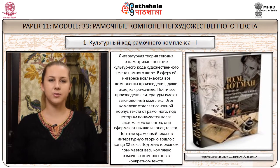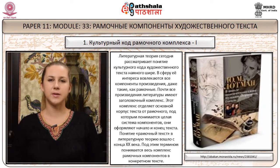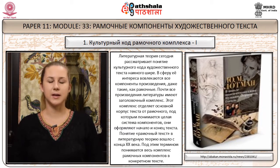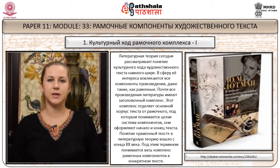Культурный код рамочного комплекса. Литературная теория сегодня рассматривает понятие культурного кода художественного текста намного шире. В сферу её интереса вовлекаются все компоненты произведения, даже такие, как рамочные. Почти все произведения литературы имеют заголовочный комплекс. Этот комплекс отделяет основной корпус текста от рамочного, под которым понимается целая система компонентов, оформляющих начало и конец текста. Понятие «рамочный текст» в литературную теорию вошло с конца XX века.